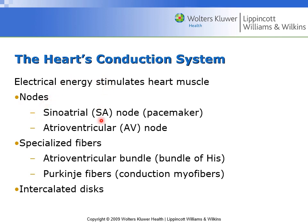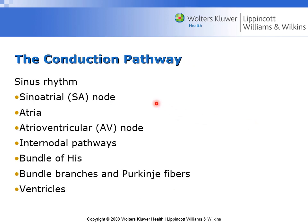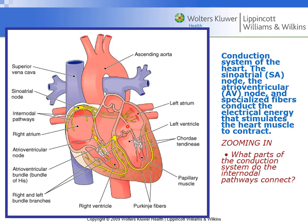The conduction system nodes include the SA node (sinoatrial node), known as the pacemaker; the AV node (atrioventricular node), which is secondary; the bundle of Hiss; the Purkinje fibers; and finally the intercalated discs. The rhythm is initiated in the SA node, travels to the AV node via internodal pathways, then through the bundle of Hiss and its branches, and ultimately reaches the ventricles, ensuring all cardiac cells are reached.